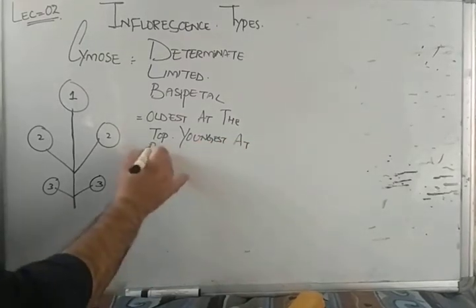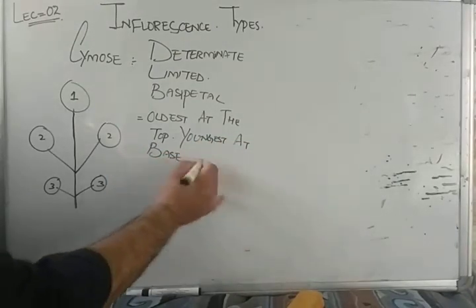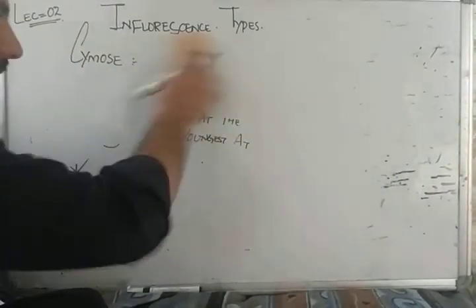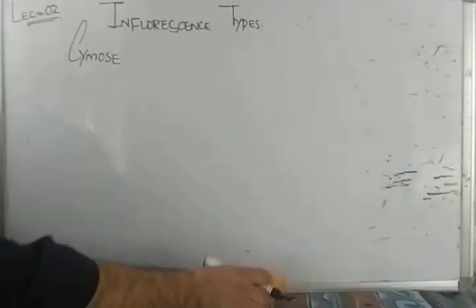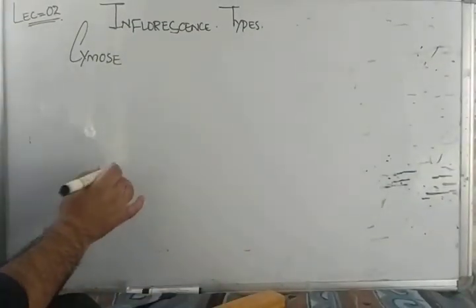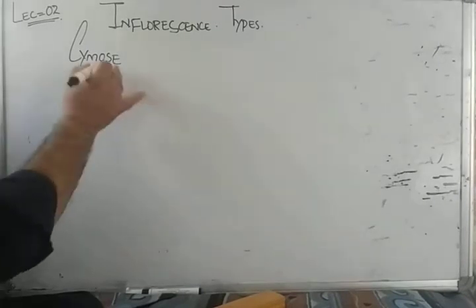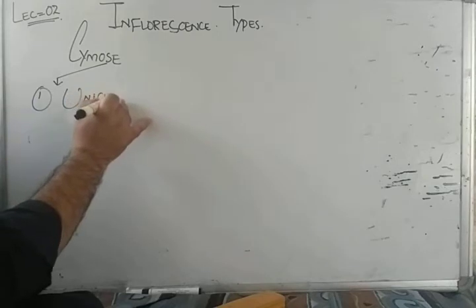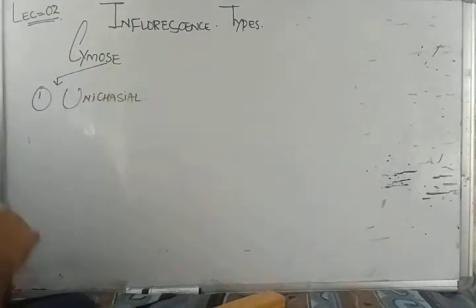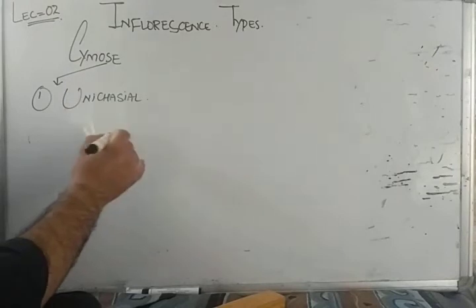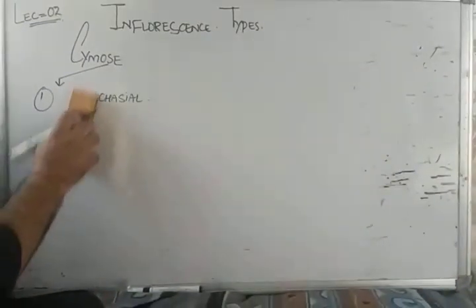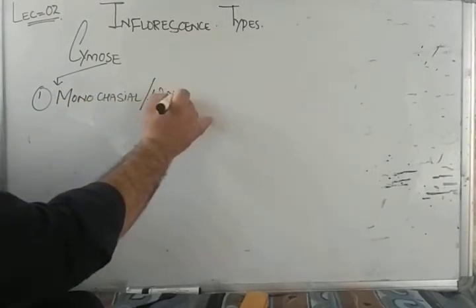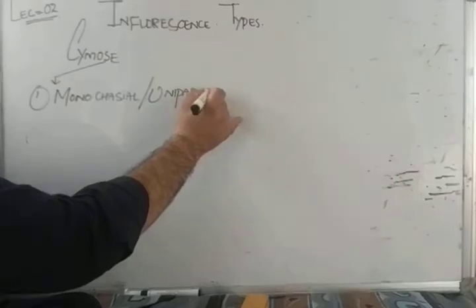Oldest flower at the top, youngest at the base — this order is called basipetal. Now cymose inflorescence is of the following types. The first type of cymose inflorescence is called unichasial cyme, also written as uniparous cyme.